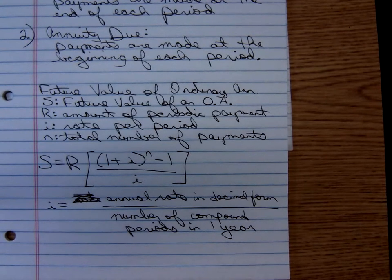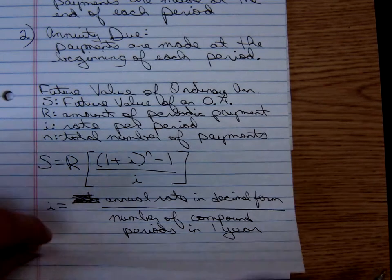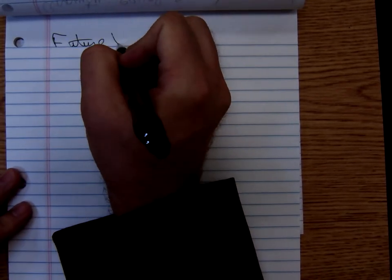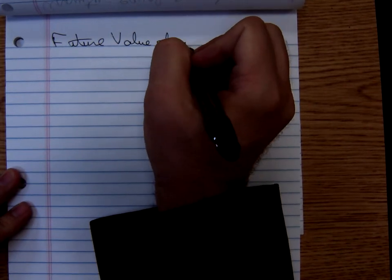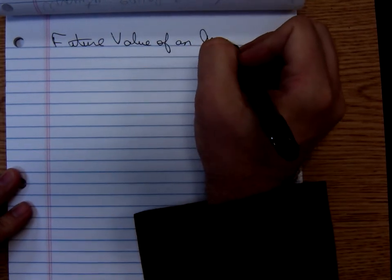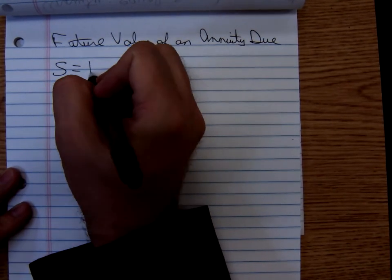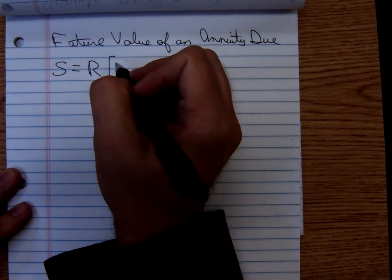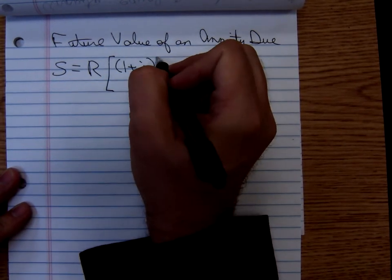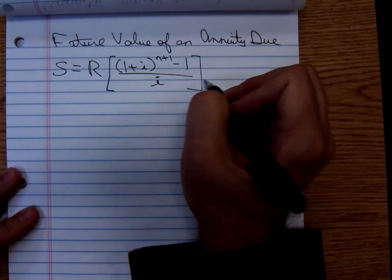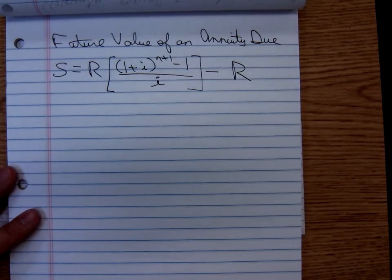Using those same variables for the future value of an annuity due, we'd have S equals R times (1 plus I to the N plus 1 minus 1), all over I, minus an artificial payment of R dollars.